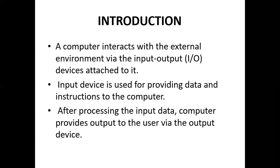For example, when you are interacting via social media using your mobile phone and you want to send a voice note on WhatsApp, you use the microphone on your phone to record the message. That is an input device providing data for the computer. You also have to give instructions — if it's a message you want to send to a friend, you record the message and then press the send button.